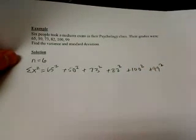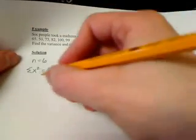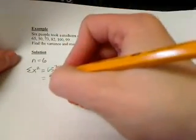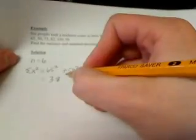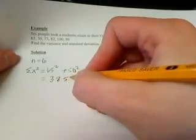So you have to square all of the individual data values first, and then simplify. You should get 38,579.